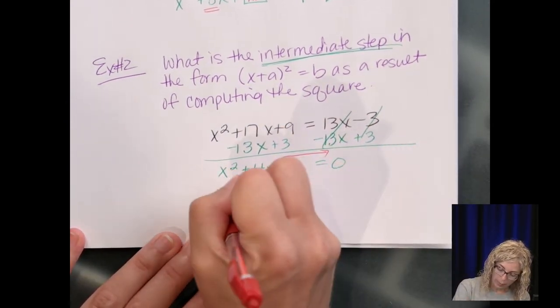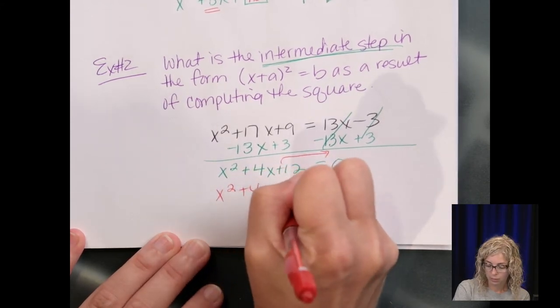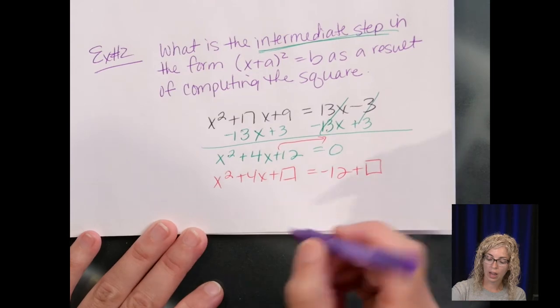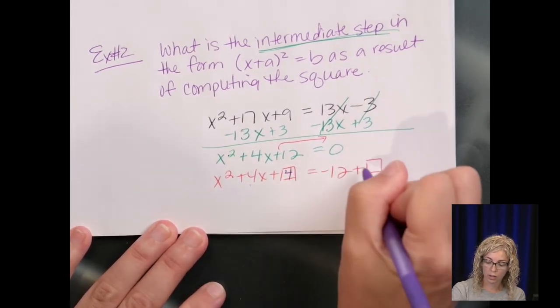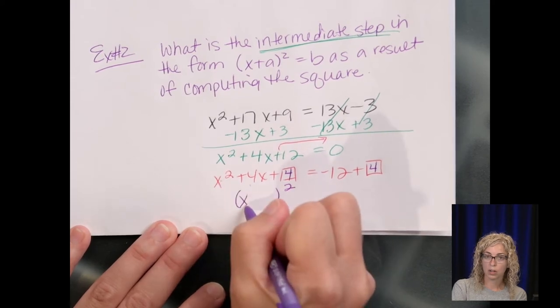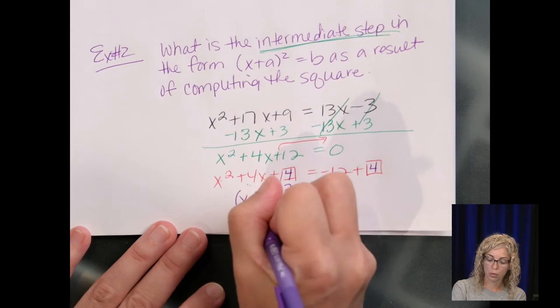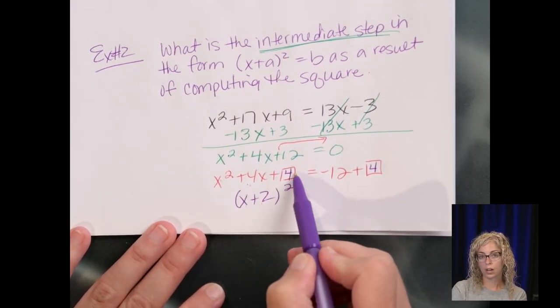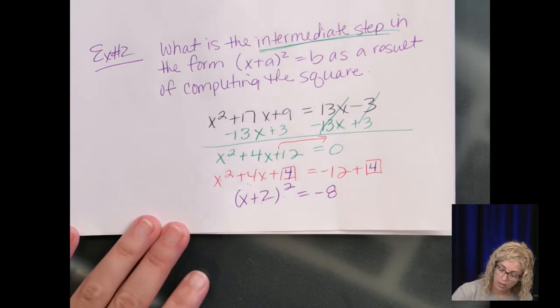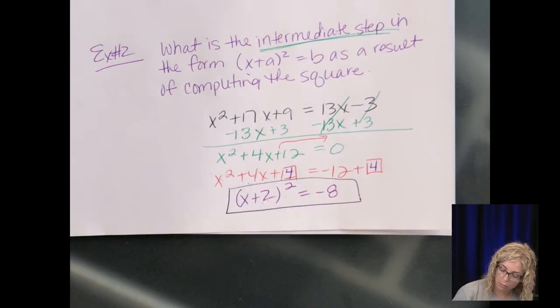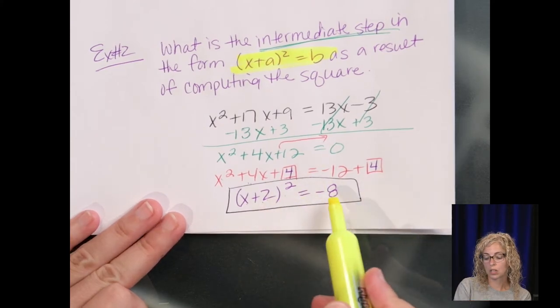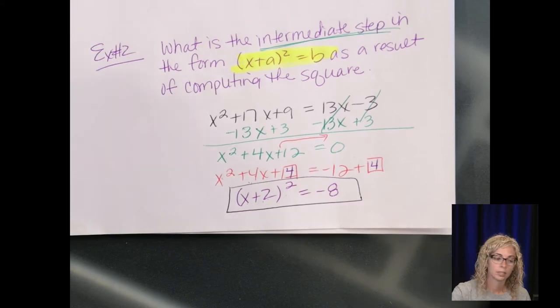Now we add the box to both sides. We have to move the 12 back over and add the box. The 12, if it's positive here, I move it to the other side, it becomes negative. So then half of 4 is 2, and 2 squared is 4. And then now when we factor this, what do I square to get x squared, and what do we square to get 4 that adds to 4, and that's positive 2. So 2 squared is 4, and 2 plus 2 is 4, equals negative 8. The final answer would be this, because this form matches this form. The square of a binomial equals some number.